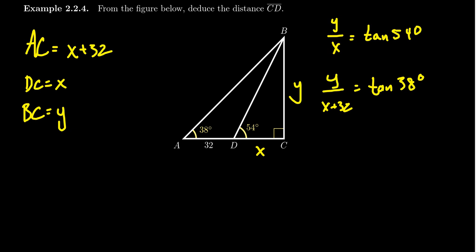you would end up with the statement that X times tangent of 54 degrees equals Y. But Y is also equal to X plus 32 times tangent of 38 degrees. Basically, if you cleared the denominators for the second one, you get this. So Y here is acting like a middleman. If we just take it out, we now have an equation of X that we can try to solve for.